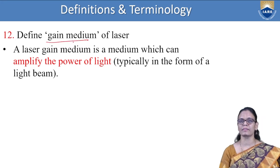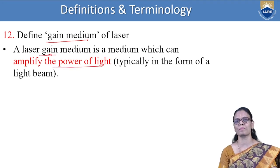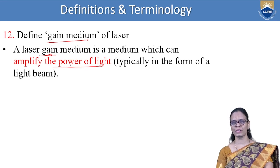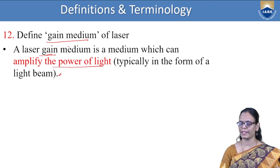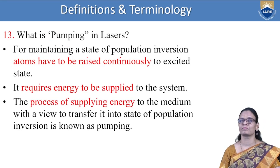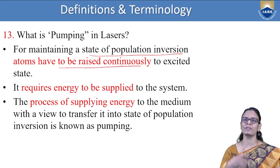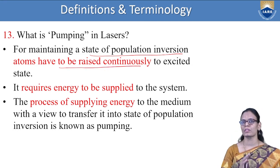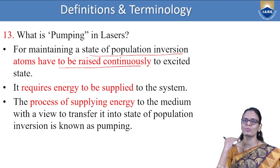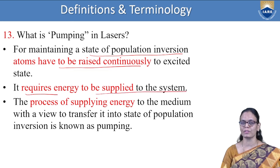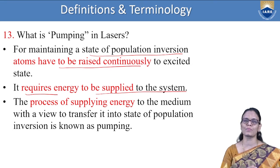What is a gain medium in a laser? A gain medium is a medium which can amplify the power of light — gain here represents amplification — typically in the form of a light beam. What is pumping? For maintaining the state of population inversion, atoms have to be raised continuously to the excited state. The process of supplying energy to the medium in order to transfer atoms from the ground level to the excited state is called pumping.